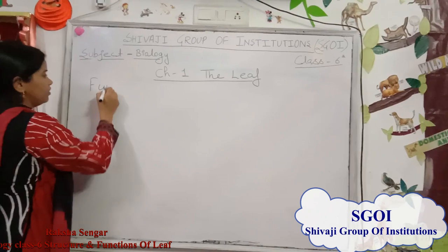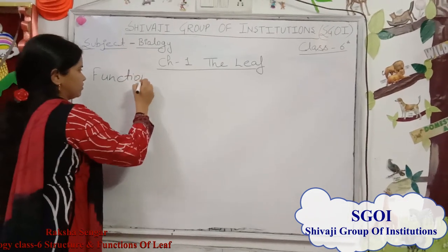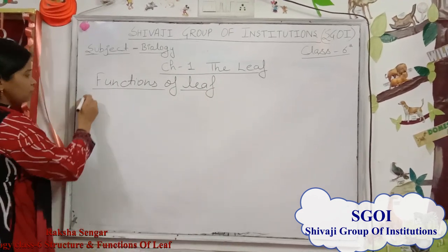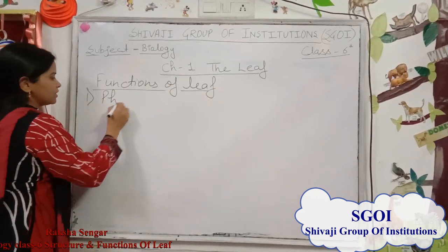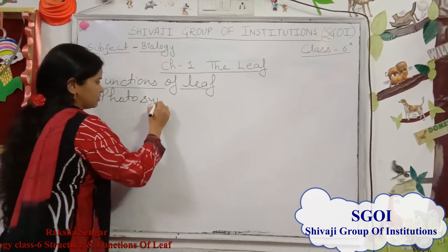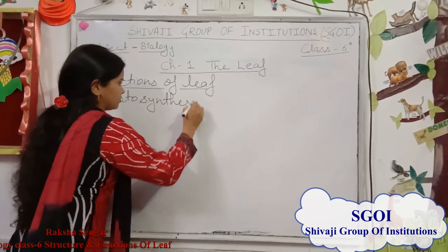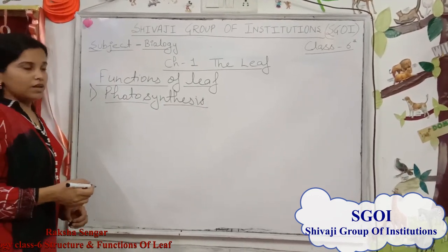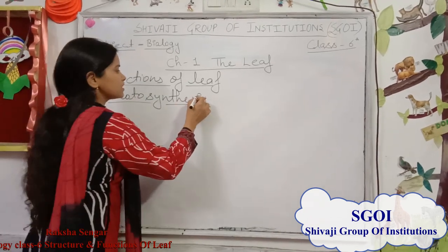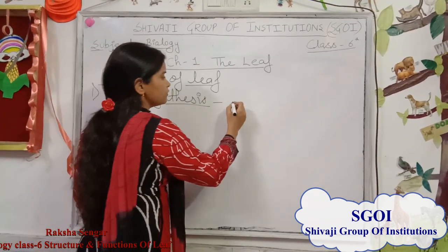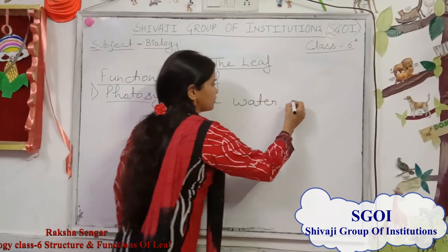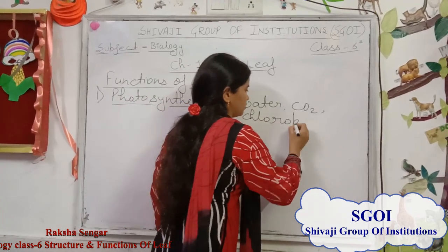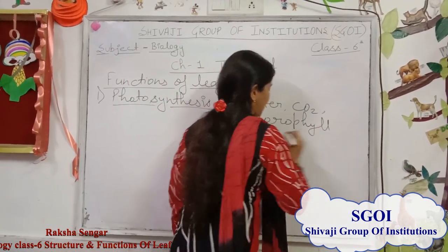Next are the functions of a leaf. The first function is photosynthesis. Leaves make food — they prepare food for the plant by the process of photosynthesis. In the process of photosynthesis, leaves require water, carbon dioxide, chlorophyll, and sunlight.